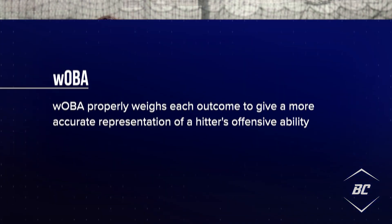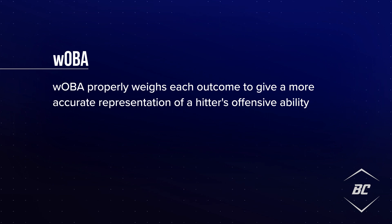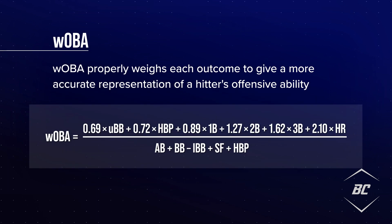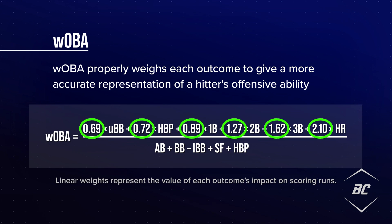Like OPS and OPS+, WOBA attempts to capture a hitter's contribution to their team in one singular metric. What makes WOBA more useful is its ability to properly weigh each outcome to give evaluators a more accurate representation of a hitter's ability. Made popular by sabermetrician Tom Tango, WOBA is represented by this equation. While this may appear complicated at first glance, it's actually much simpler than it looks. The coefficients assigned to each outcome are called linear weights and are designed to represent each of their impacts on run scoring.